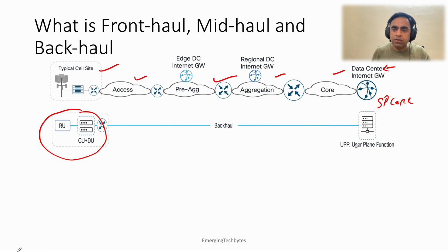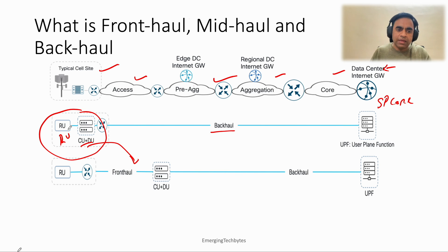But if I split these CU and DU and only keep my RU here, like in this case, then this becomes my front haul where RU is connected to CU and DU, and then this becomes my back haul.